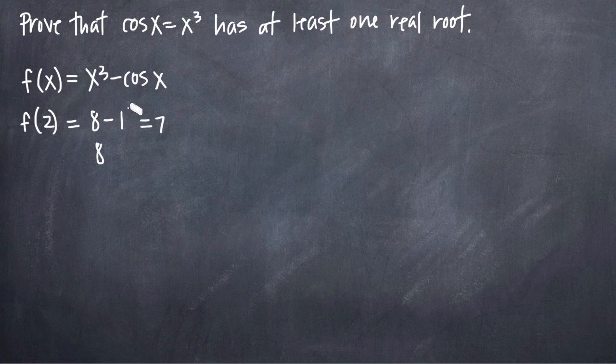Even if the value there is the most extreme value in the other direction, negative 1, we'd get 8 minus negative 1, which would give us 9. Either way, we're going to get an answer greater than 0. Both 7 and 9 here are positive numbers that are greater than 0.